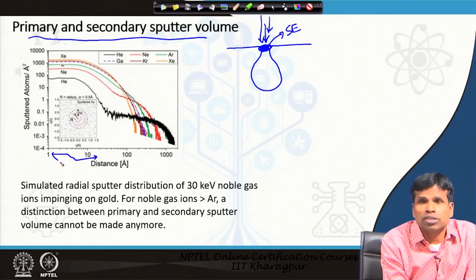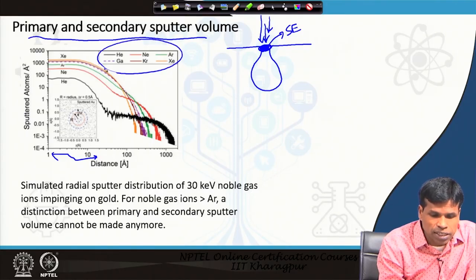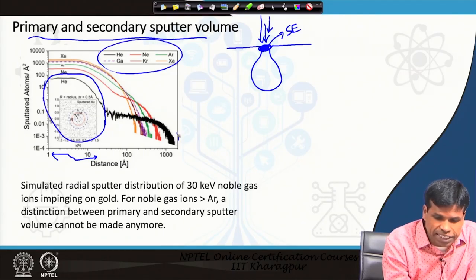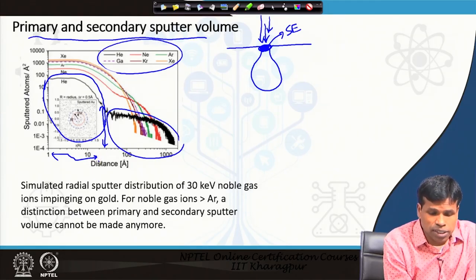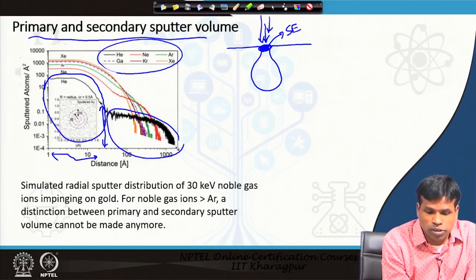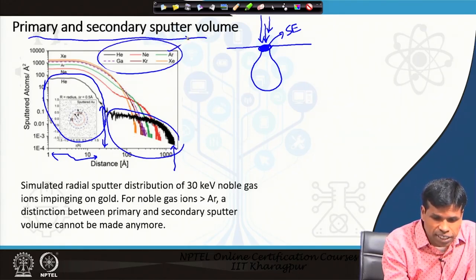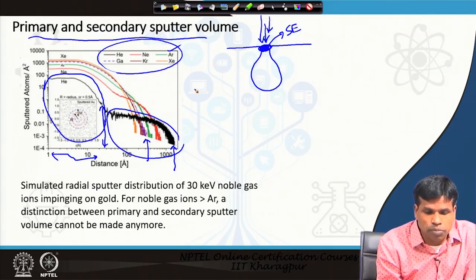The region from where the beam first bombards the specimen is the primary sputter volume. Comparing different ions — helium, neon, argon, xenon, krypton — for helium, this primary sputter volume is the smallest area, around a maximum of 5 nanometers. For heavier masses above argon, there is almost only one interaction volume — the primary and secondary interaction volumes cannot be differentiated. As you increase the mass of the ions, the beam range becomes less, they cannot penetrate as deep, and the lateral spread also increases with higher mass.